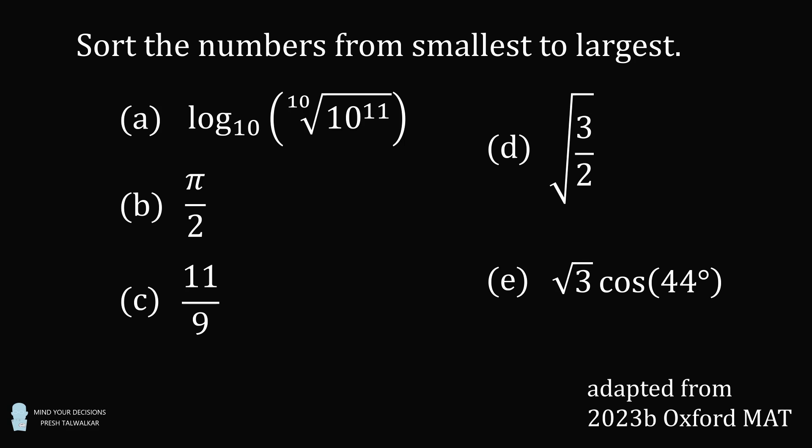This problem is adapted from the 2023b Oxford Mathematics Admissions Test. That question only asked you to find the smallest number. I made things a little more interesting by saying you have to rank all five options from smallest to largest. This is not a calculation exercise — no calculators are allowed. The challenge is to sort the numbers using only your mathematical ability to compare them.